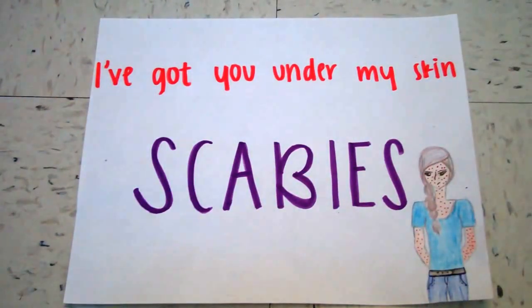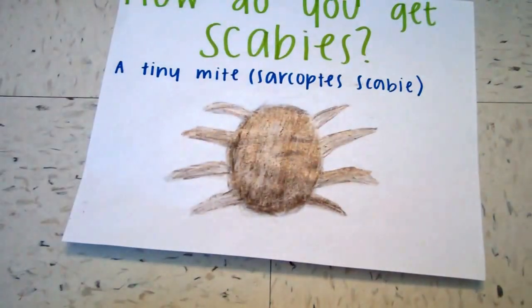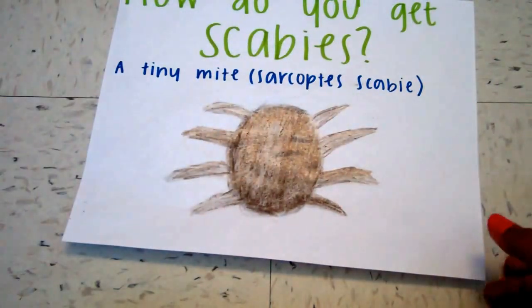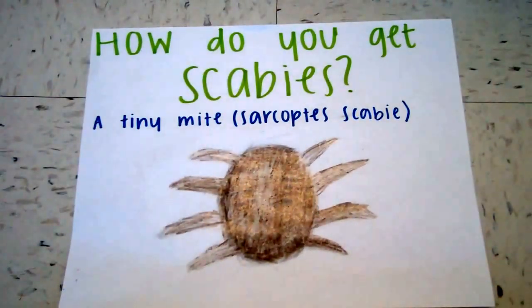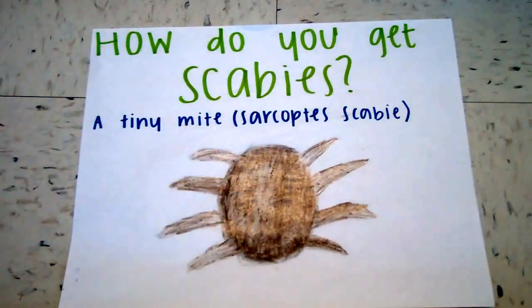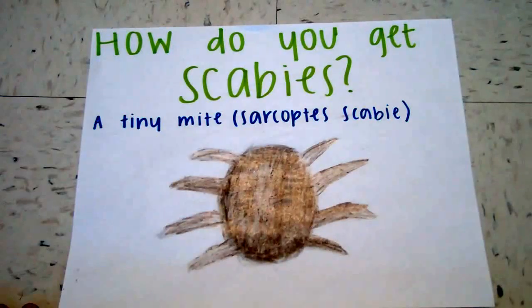I've got you under my skin. Scabies. How do you get scabies? Scabies is a disease caused by a tiny parasite called a mite. Its scientific name is Sarcoptes scabies.